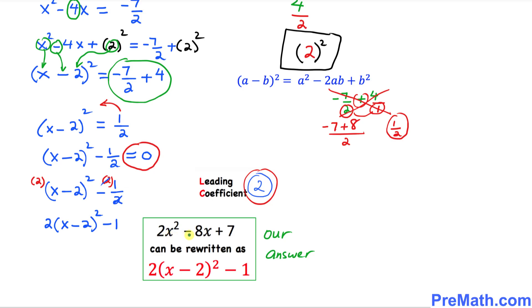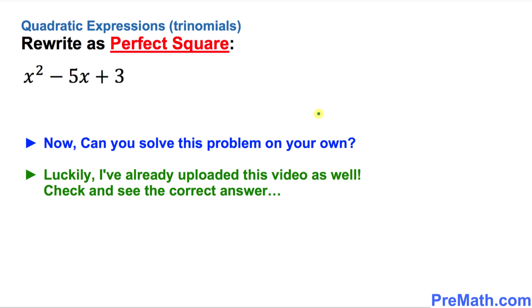So this 2(x - 2)² - 1 represents a perfect square. So thus 2x² - 8x + 7 can be rewritten as this new thing, as a perfect square.